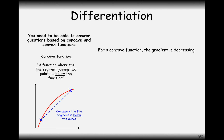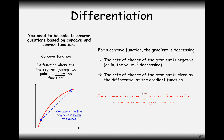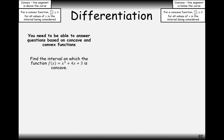For a concave region, it's fairly similar. The gradient is getting smaller and smaller, therefore the rate of change of the gradient is negative. So the second derivative is below zero for a concave function. To summarise: convex means the line segment is above the line and the second derivative is positive; concave means the line segment is below the line and the second derivative is less than zero.